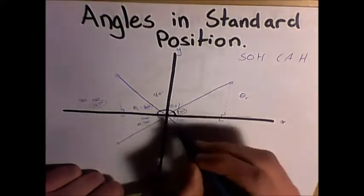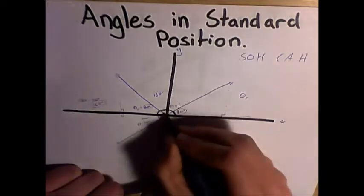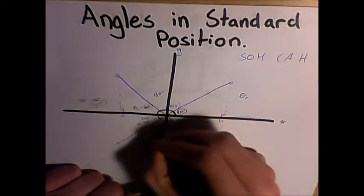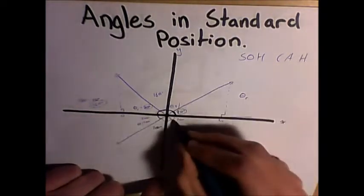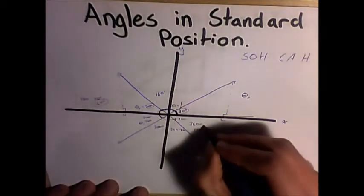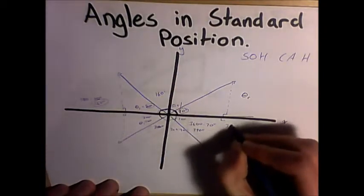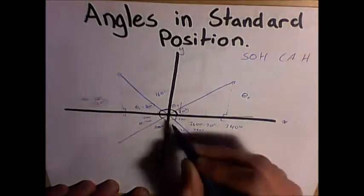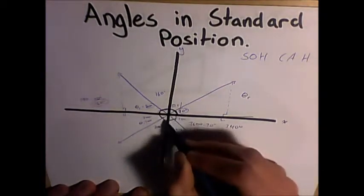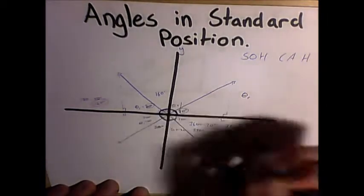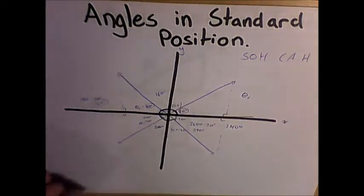And then if we look at this arm, we find this to be 200 degrees. And this arm we find to be 360 degrees minus 20 degrees is 340 degrees. And that is our standard position angle. But our reference angle is still 20 degrees.